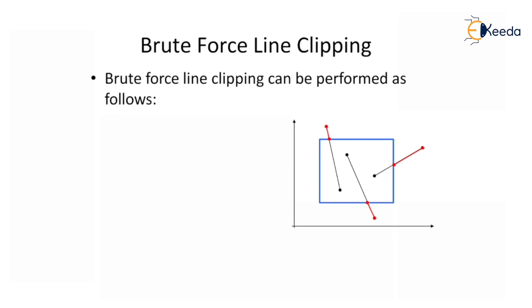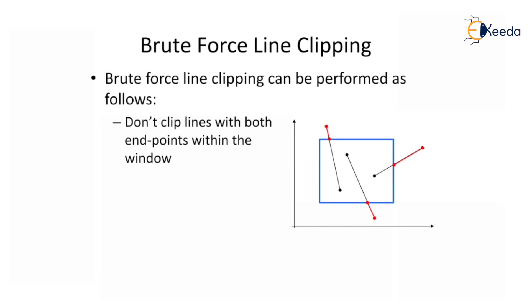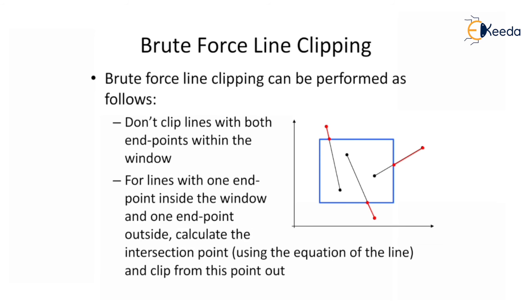Brute force line clipping is performed as follows. Don't clip lines with both end points within the window — observe the red lines as an example. For lines with one end point inside and one outside, calculate the intersection point on the window boundary using the equation of the line, and clip from that intersection point to the outside.